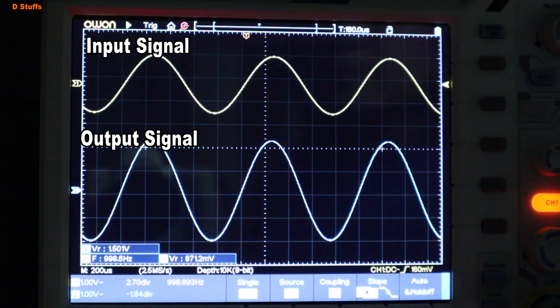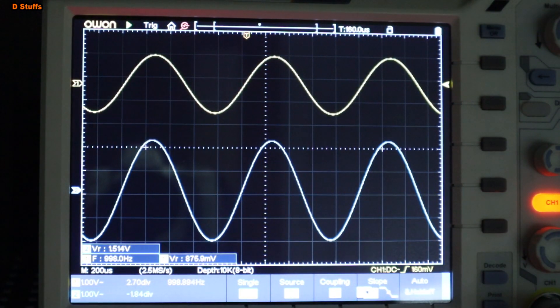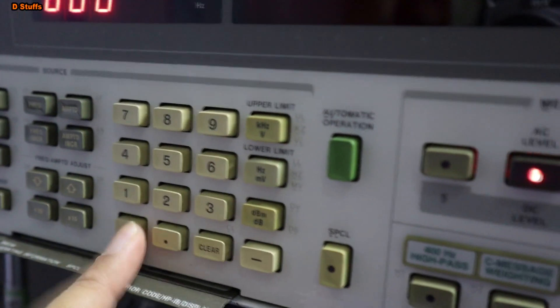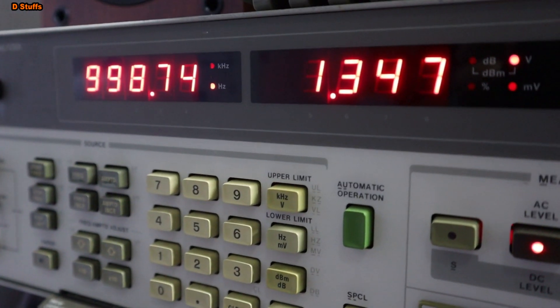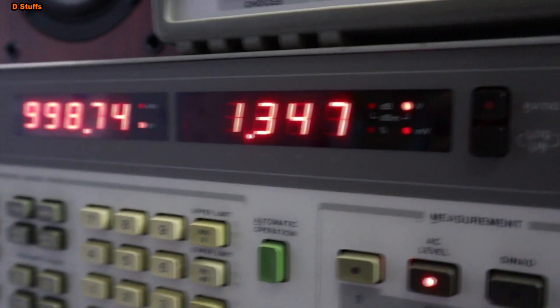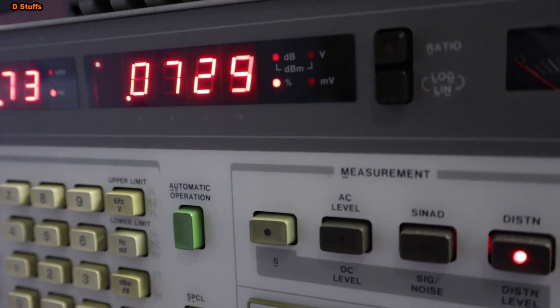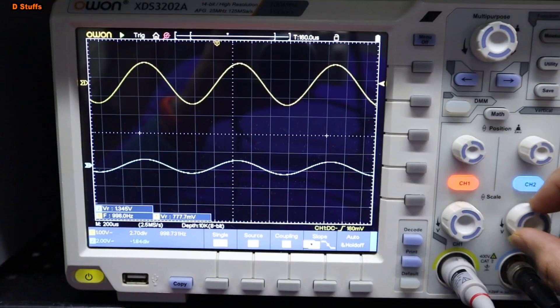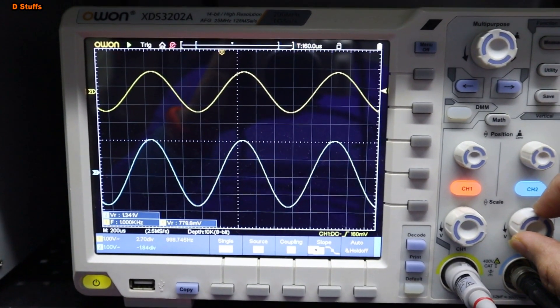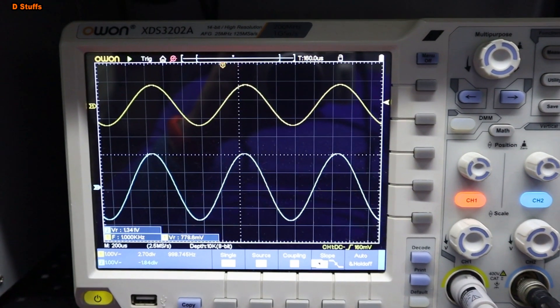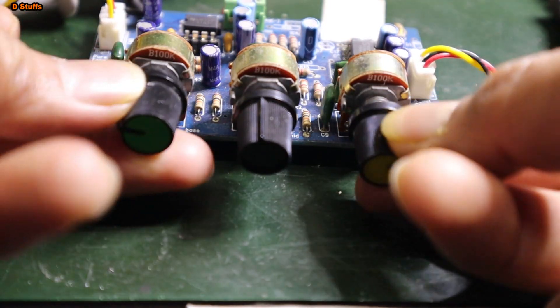The first test is to know the output voltage swing when we input a sine wave of 1 kHz frequency at an amplitude of 800 mV or 0.8 V RMS for the left and right channel, and to understand the total harmonic distortion at that input condition.